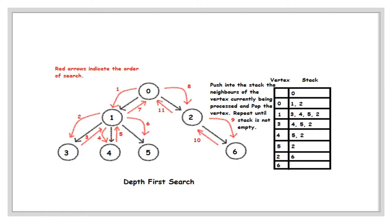So let's see with the help of an example. Here is a graph. So 0 is the source vertex. It goes to 1, then 2 and 4, then 5 and 6. Then backtrack and goes to 7, and after that 8, 9, and backtracking to 10, 11. This is all depth first search, where it goes to all nodes and then by backtracking checks if there is any node left unvisited. That's why it's called depth first search.